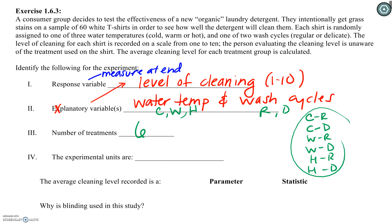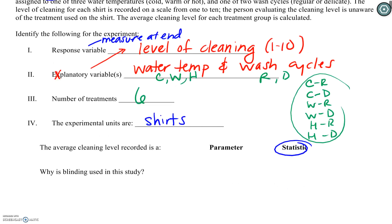Our experimental units — the things being randomly assigned — are each individual shirt. There's nothing here showing this is a load of laundry; it's the t-shirts themselves. The average level of cleaning recorded is a statistic, since this is a sample of 60 white shirts. As for why blinding is used: it's to reduce bias. If I personally believe hotter water cleans better, I might not be impartial when scoring shirts, knowing which treatment they came from.